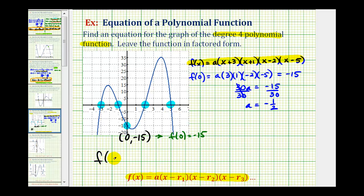We'd have f of x equals negative one-half times the quantity x plus three times the quantity x plus one times the quantity x minus two and times the quantity x minus five.